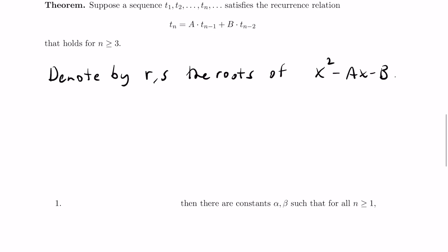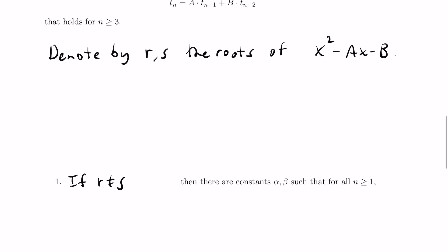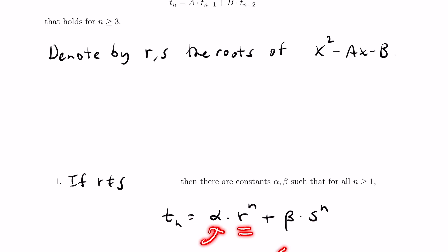Then if the two roots are different, there are constants alpha and beta so that the nth term will look like alpha times one of the roots to the n plus beta times the other root to the n. So this nth term will be the sum of scaled versions of exponentials that are governed by the roots of this polynomial.